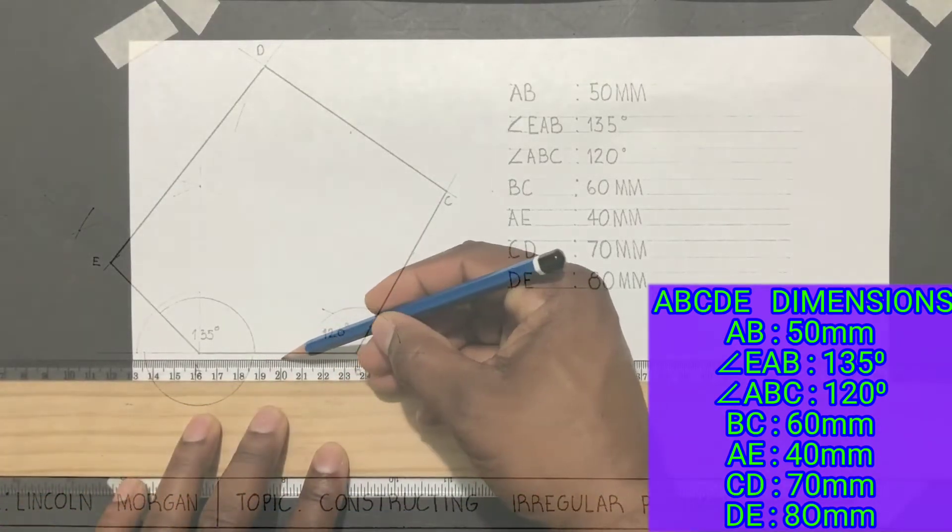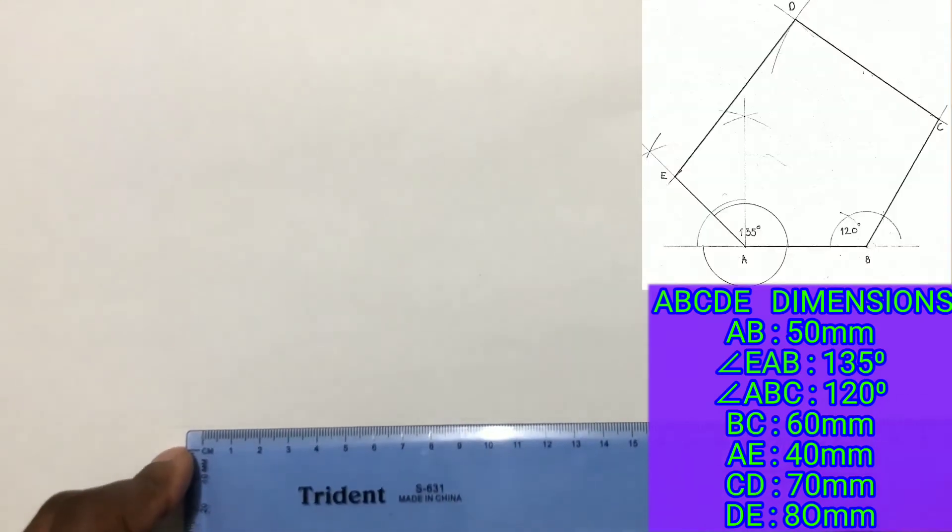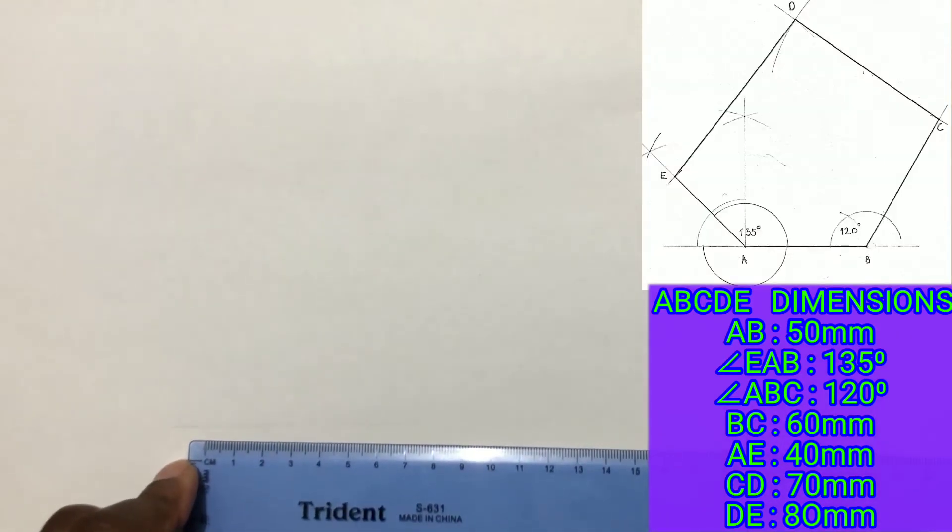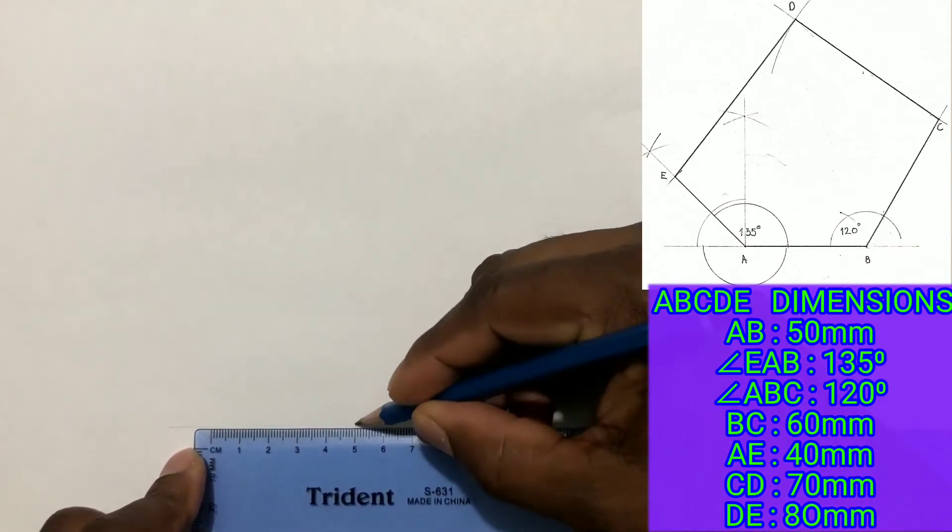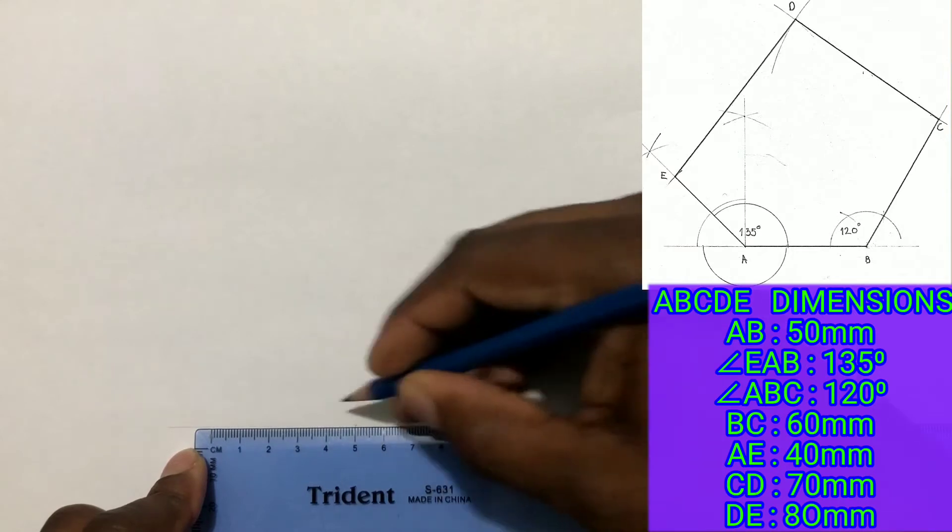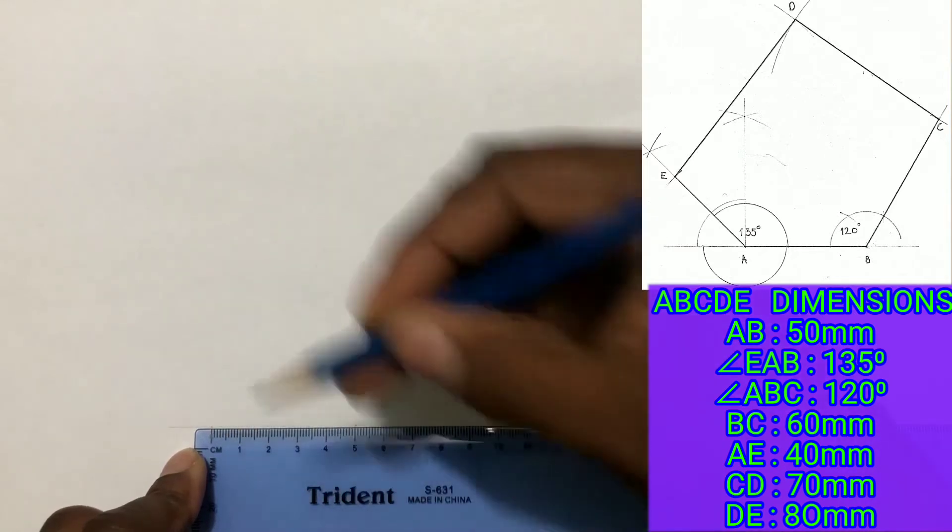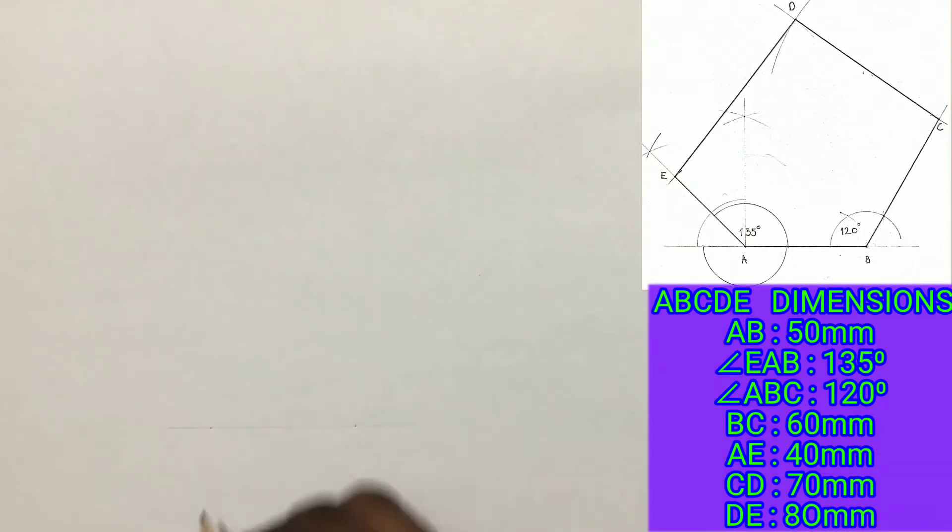First draw your line AB and identify 50 millimeters on this line. Label the points A and B.